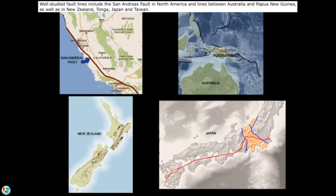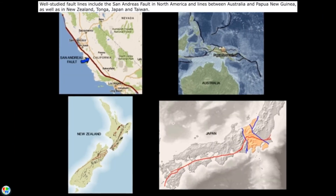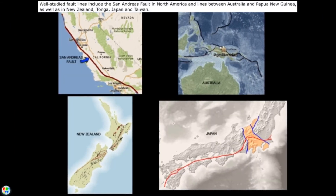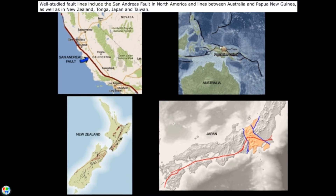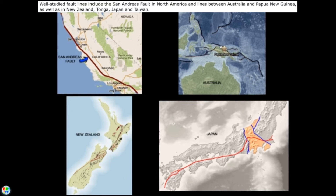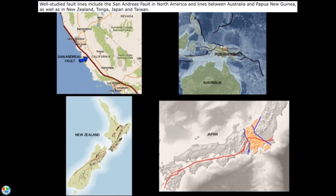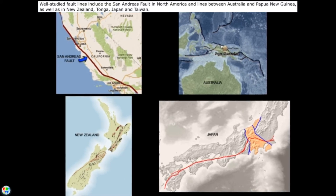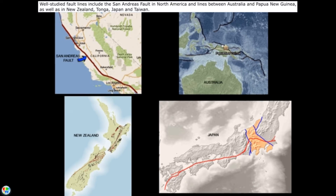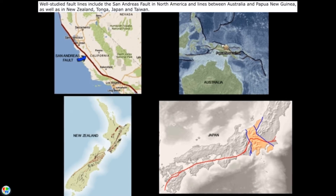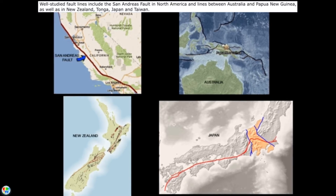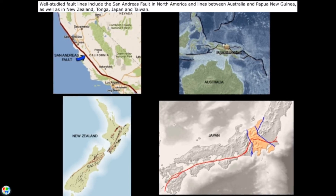Well-studied fault lines include the San Andreas Fault in North America, and lines between Australia and Papua New Guinea, as well as in New Zealand, Tonga, Japan, and Taiwan.